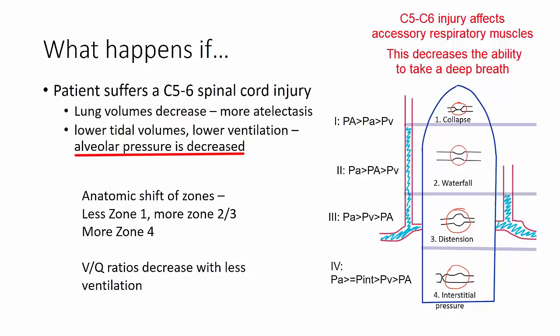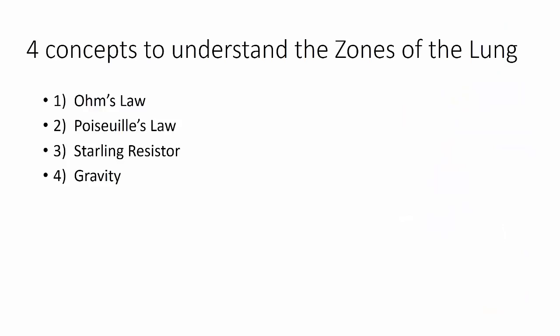These are scenarios where you can use what is happening to the patient to describe how the zones of the lung will change. What I hope to have described are the zones of the lung and how they can be explained by four simple physics concepts: Ohm's Law, Poiseuille's Law, the Starling resistor, and gravity. Moving forward, I hope you can use these concepts to describe patient physiology and how they affect the zones of the lung. Thank you.